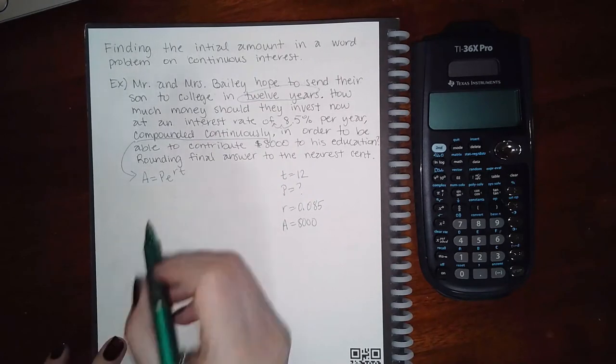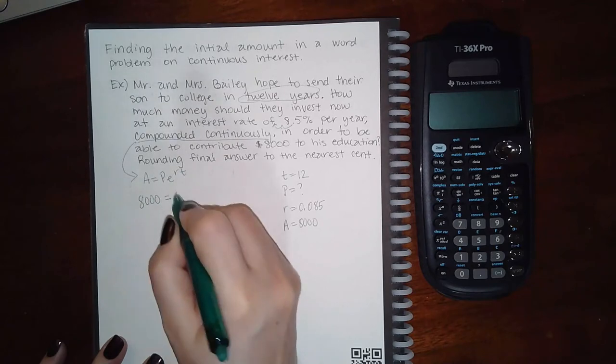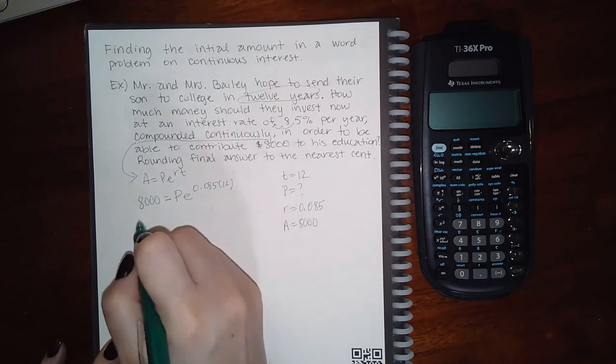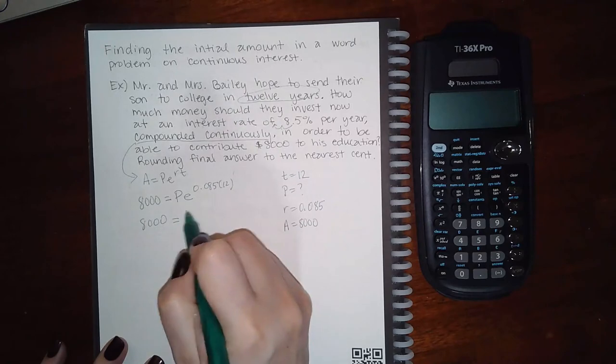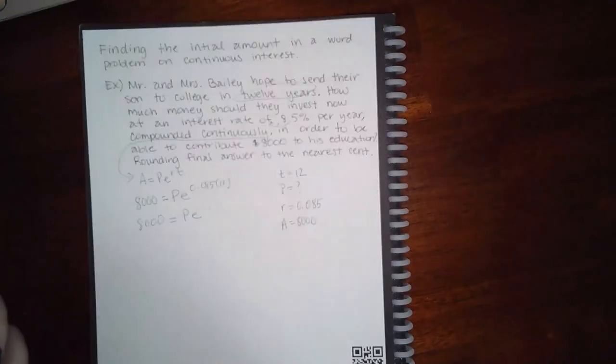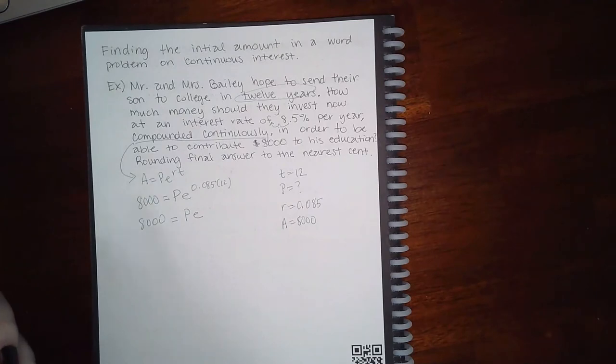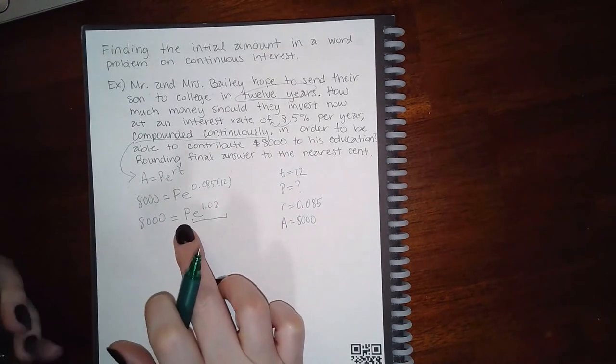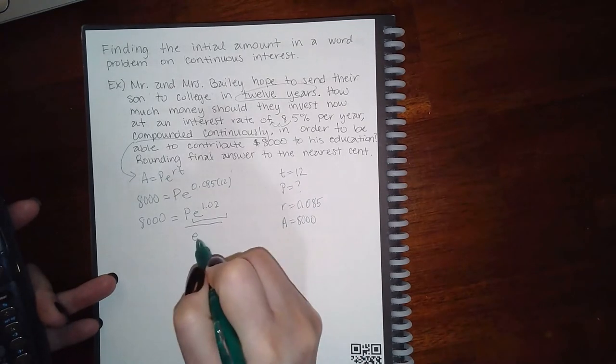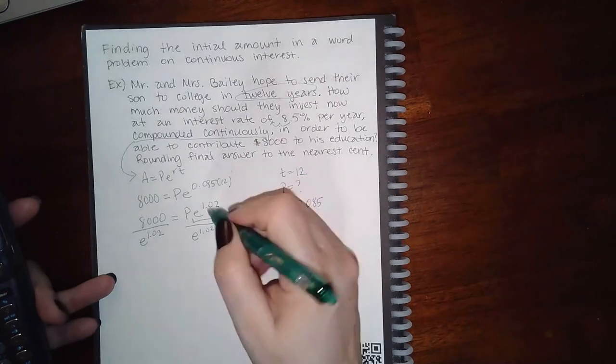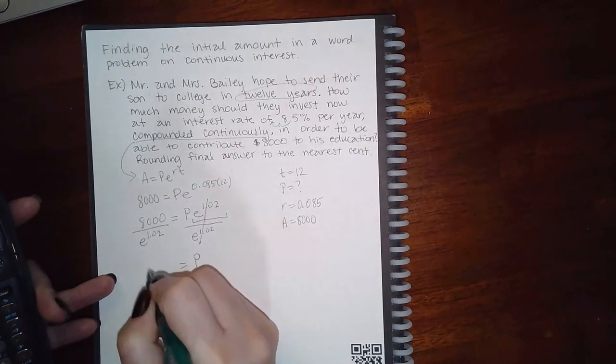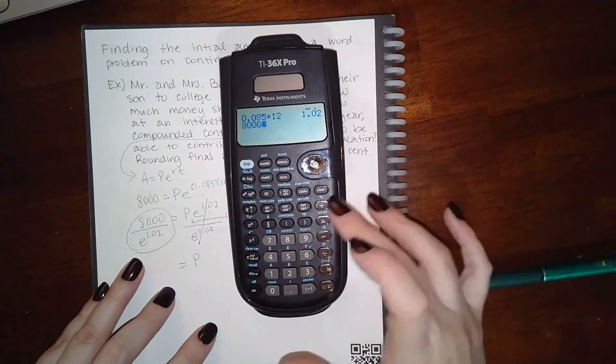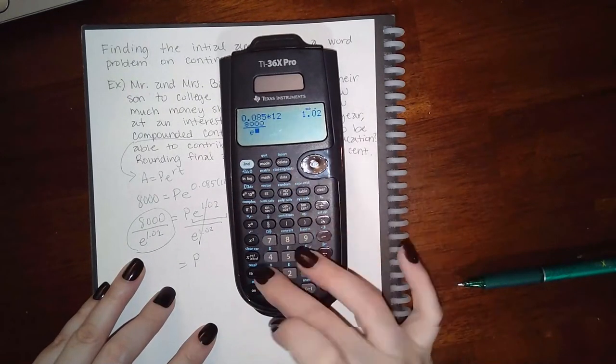Round your answer to the nearest cent. So I'm going to plug in $8,000 here, P I don't know what it is, e^(0.085) and t is 12. Now remember, this is all just a big number. Let me see: 0.085 times 12 is 1.02. This is a number, and if you have a number multiplied by your variable, how do you get rid of that number? You divide by that number. So this cancels and I have my variable all by itself. And on the right-hand side I just need to type that in my calculator. I'm going to type 8000 over e to the 1.02.